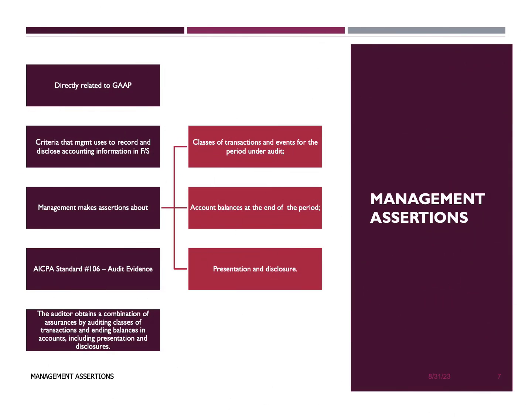By systematically assessing these assertions, auditors create a roadmap for gathering relevant and sufficient evidence to validate the accuracy and integrity of the financial statements. This approach enhances the reliability of the audit process and the resulting opinion provided by the auditor. Assertions can be broken down into three categories.